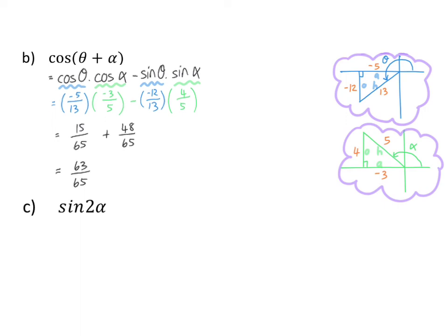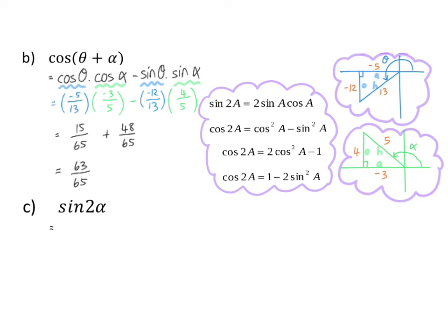In C, we are asked for the ratio of sin 2 alpha. We have a triangle only for alpha, and we use the double angle identity to change this into 2 sin alpha multiplied by cos alpha. For sin alpha and cos alpha, we read the ratios from the green triangle and calculate the result as minus 24 over 25.